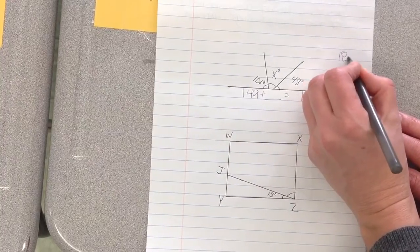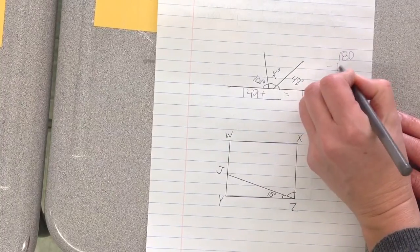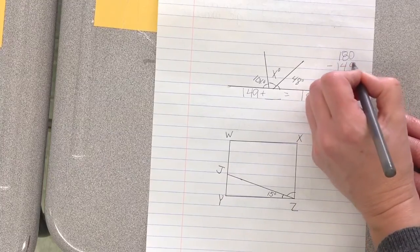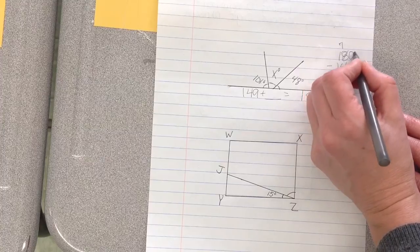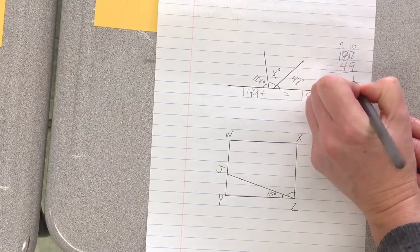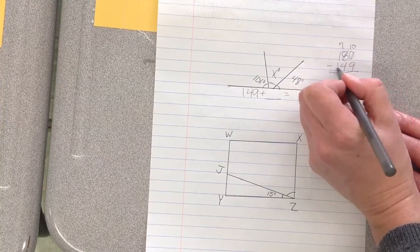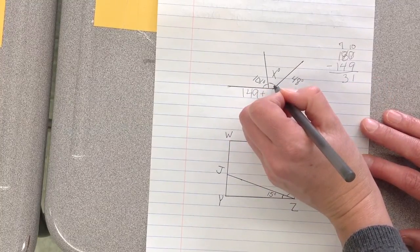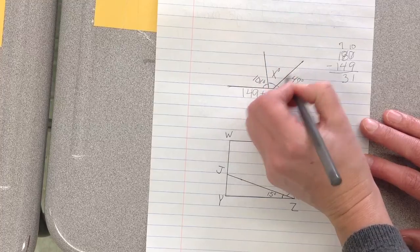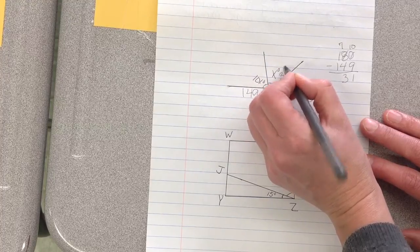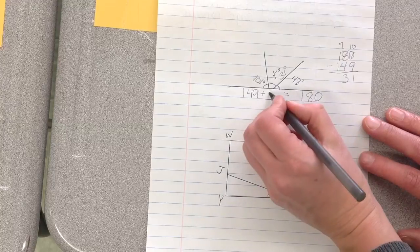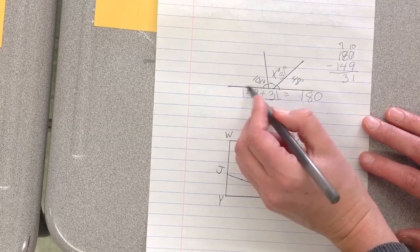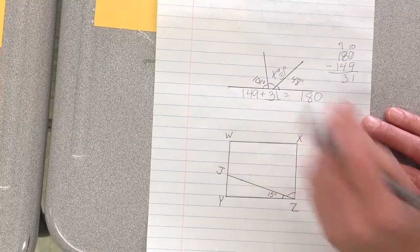So if you have to, you go over here and you subtract if you have trouble with this in your head. Zero minus nine, we can't do this. We have to borrow from the tens. This now becomes a ten. That's one. Seven minus four is three. So this angle right here is 31 degrees because this angle is 101, this one is 31, this one is 48.